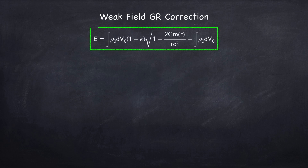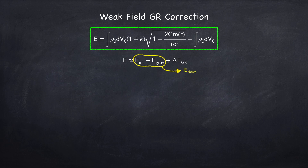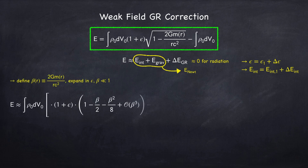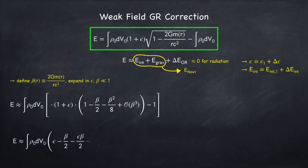What we're going to do now is find the post-Newtonian correction in the weak field limit — the first-order GR correction beyond Newtonian gravity. We write the energy as the Newtonian energy plus a correction due to GR. This will only be applicable to a radiation equation of state, where the total energy is close to zero. The internal energy is broken up into a first-order term plus a correction. I define β(r) as the metric deviation, and assume that ε and β are both small terms. Expanding the energy to second order in ε and β and dropping all third-order terms leaves us with an expression for the total energy. Naively you might identify the first-order terms as the Newtonian energy and the second-order terms as the GR correction, but we don't actually know that — it gets a little complicated.